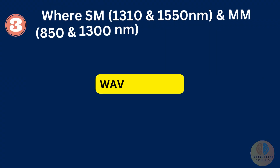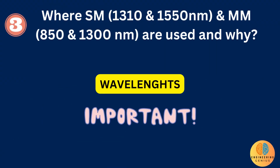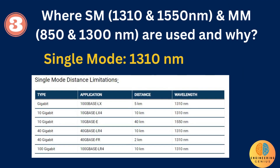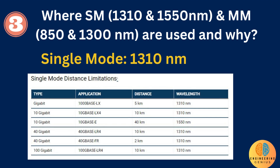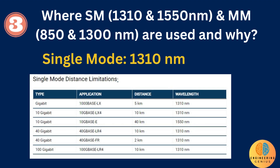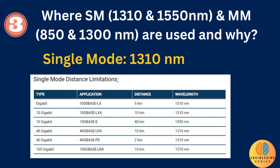A third question can be: where are single-mode wavelengths 1310 and 1550, and multi-mode wavelengths 850 and 1300 used, and why? In single-mode fiber, for 1310 nanometer wavelength, dispersion loss is 0.35 decibels per kilometer. Because of this higher dispersion loss, 1310 nm is used for distances less than 40 kilometers.